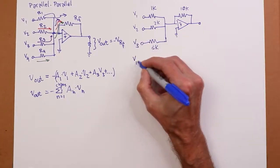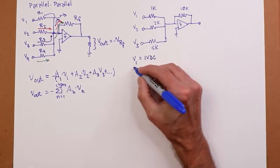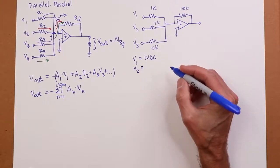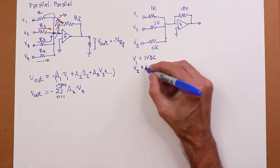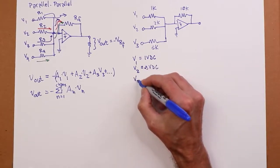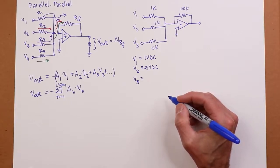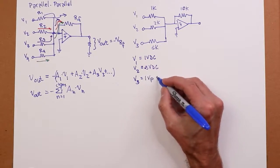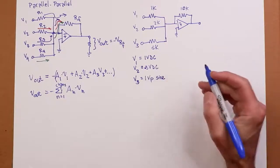All right? So for v1, I'm going to put in 1 volt DC. And for v2, I'm going to put in, let's see, what's a good number. How about 3 volts DC? Negative 3 volts DC. Don't want them to all be in the same direction. And then v3, I'm going to make that, let's call that a 1 volt peak sine. All right? A modest frequency, 100 hertz or something.